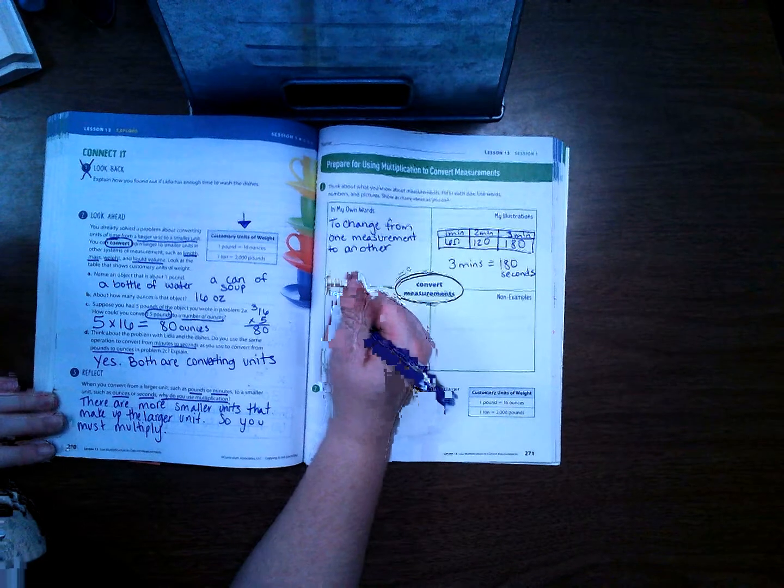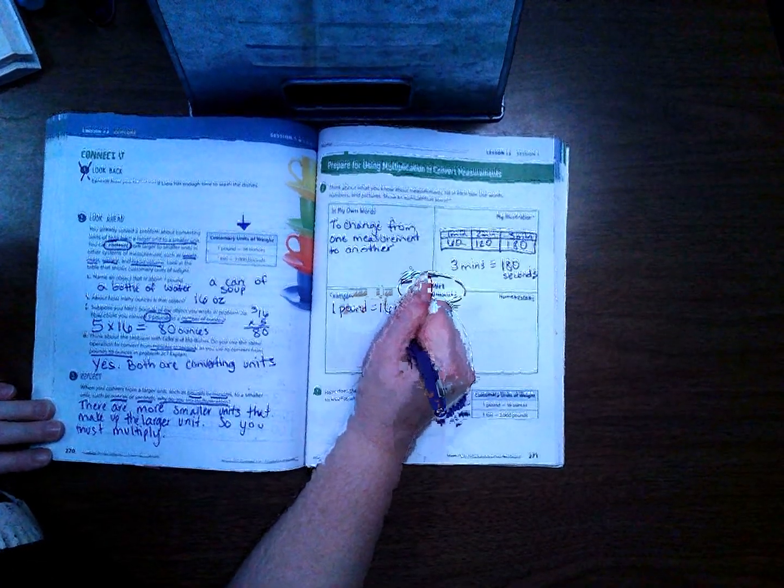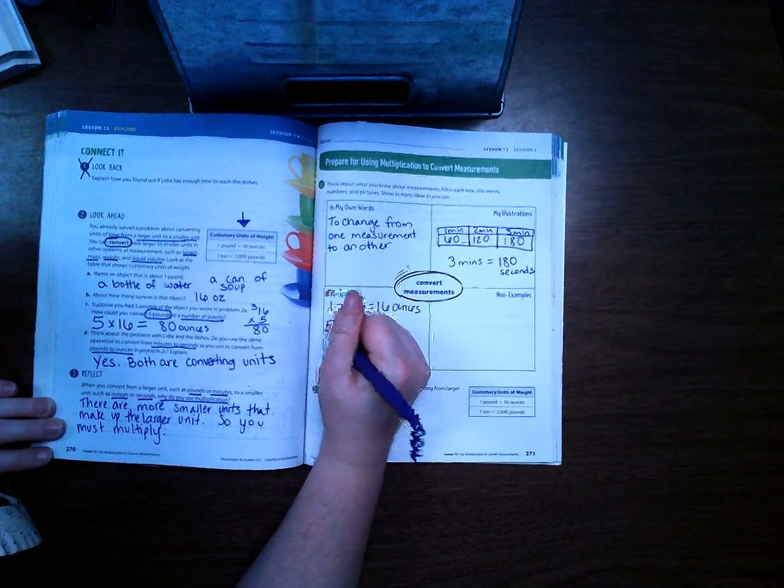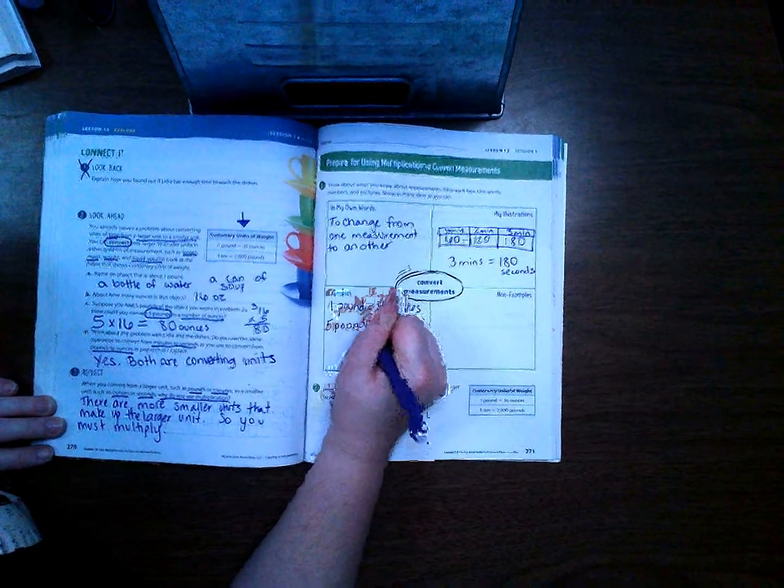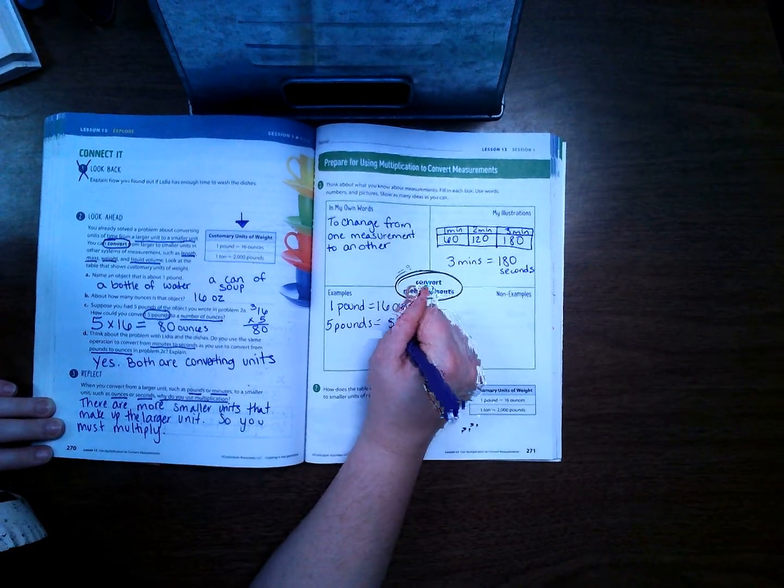Another example would be 1 pound equals 16 ounces, so 5 pounds equals 5 times 16, which is 80 ounces.